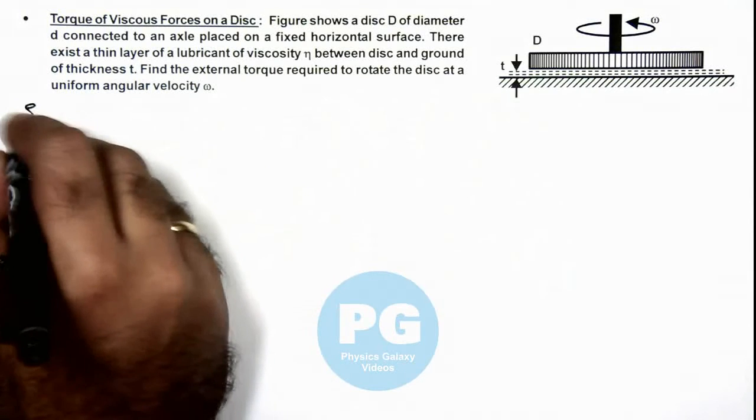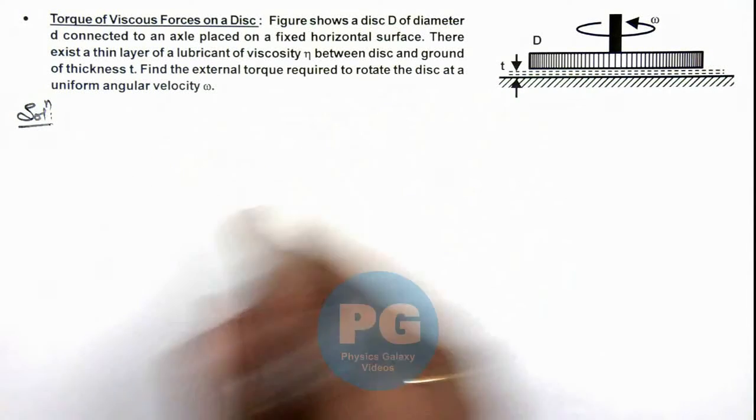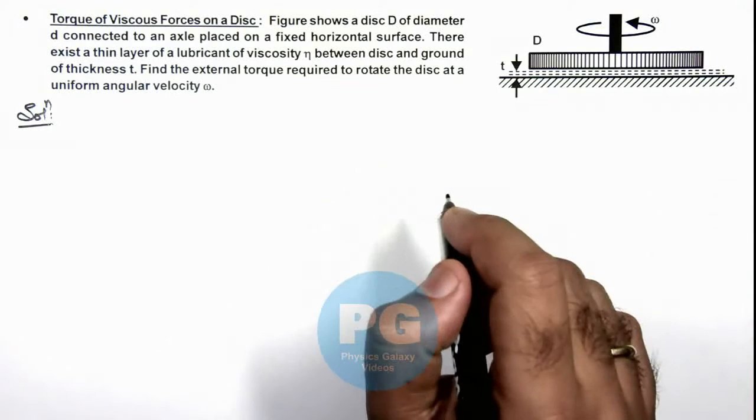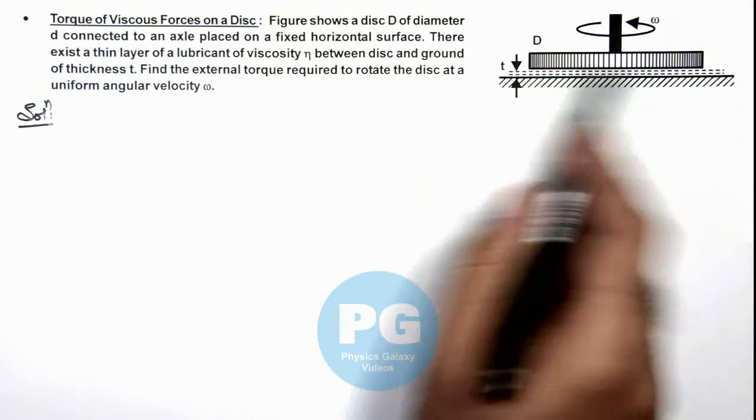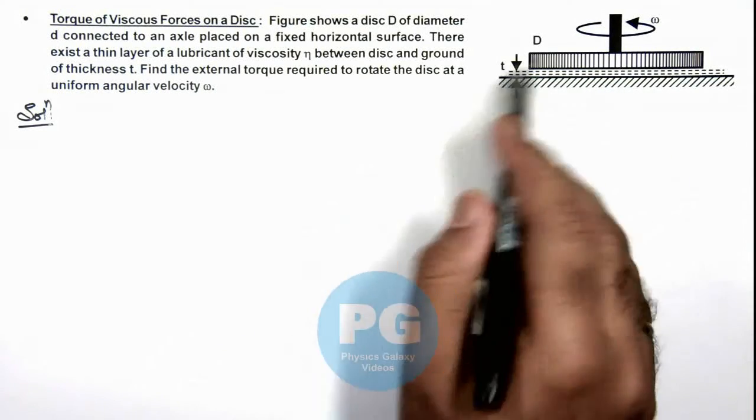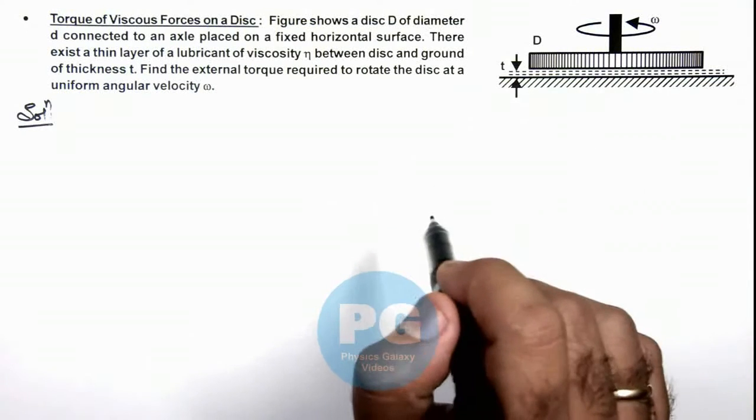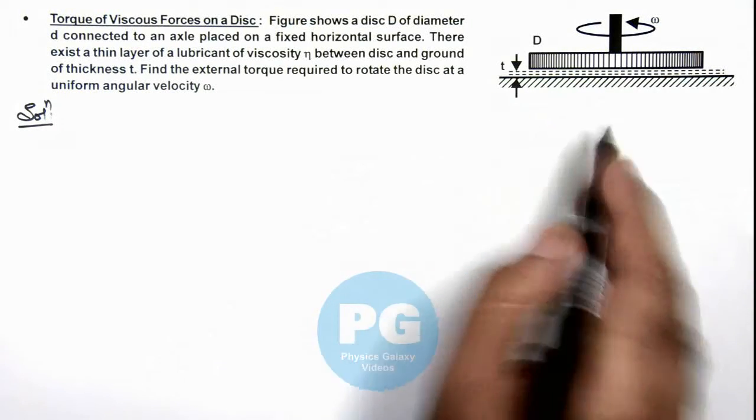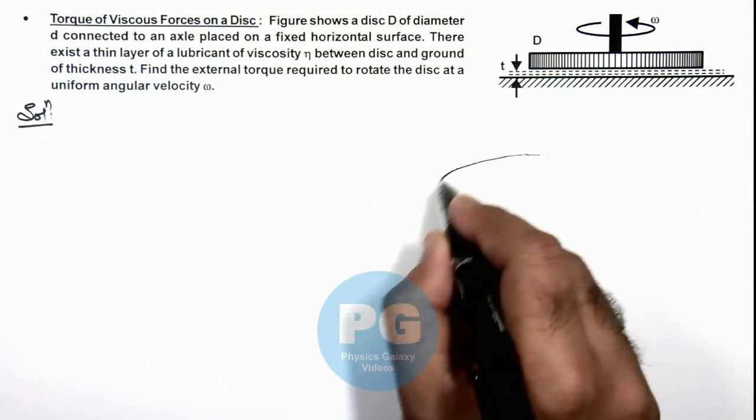Here, to analyze the torque acting on the disc that must be equal to the torque of viscous forces acting on disc, then only it can rotate at uniform angular speed omega. Now if we just have a look on the disc.